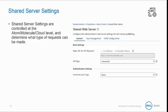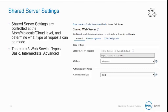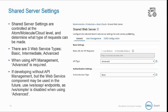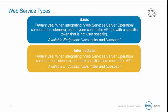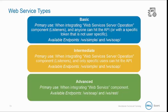Shared Web Server Settings are controlled at the Atom, Molecule, and Cloud level, and they determine what type of requests can be made. There are three web service types: Basic, Intermediate, and Advanced. When using API Management, Advanced is required. Basic is used when integrating the web services server operation component and anyone can hit the API. Advanced is used when integrating the web services server operation component and only specific users can hit the API, and also when integrating the web service component.